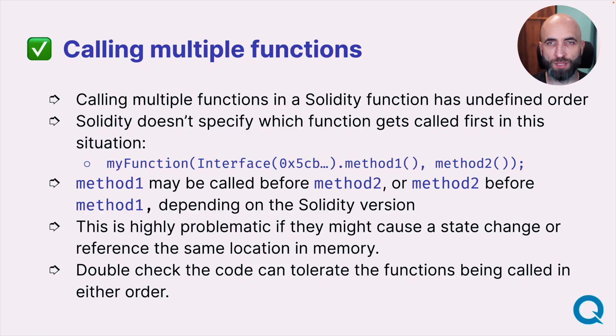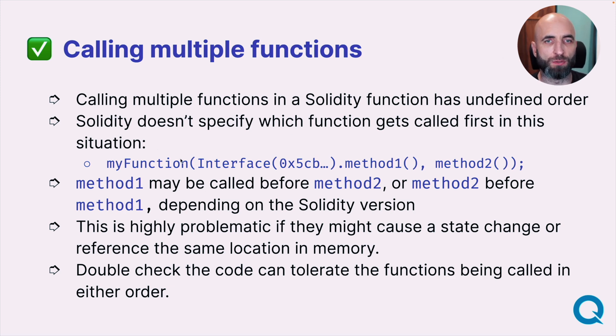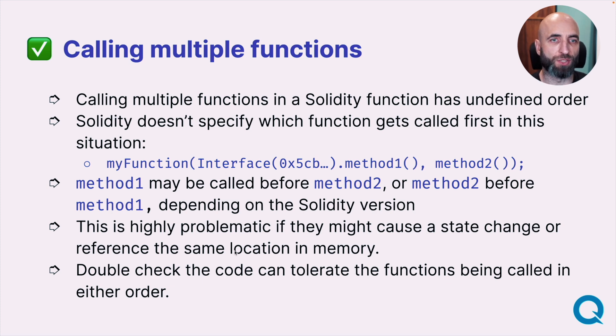Calling multiple functions in a Solidity function has undefined order. It doesn't matter if you write method one before method two — it doesn't guarantee that method one will be called first. This depends on the Solidity version and can be a big problem if one or both functions change the state of the blockchain, making the order in which they're called critically important.